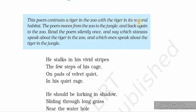He should be lurking in shadow, sliding through long grass near the water hole, where plump deer graze. Here, the poet suggests that instead of being in a cage, the tiger should have been lurking — moving stealthily — in the long jungle grass.